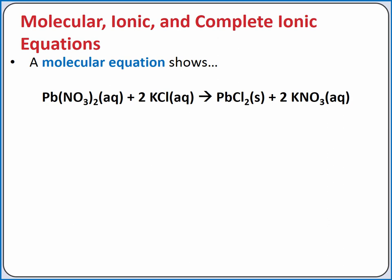There are multiple ways to represent a precipitation reaction. We introduced precipitation reactions using the molecular equation, which represents ionic compounds dissolved in water using their formula unit. For example, we can represent the reaction between lead-2-nitrate and potassium chloride using this equation.